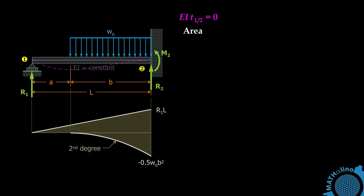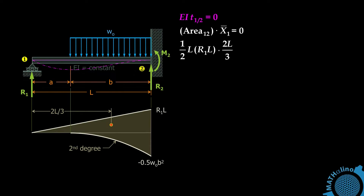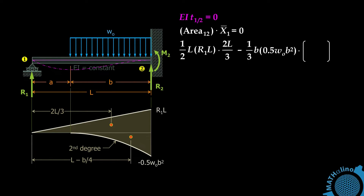The formula for deviation gives us the area of the moment diagram by parts between 1 and 2, multiplied by x-bar from 1, where x-bar is the distance from point 1 to the centroid of the area. For the triangular area: one-half times base L times altitude R1L, times centroid from 1 of 2L over 3. For the negative parabolic spandrel: minus one-third times base L times altitude 0.5 WOB squared. The centroidal distance from point 2 is B over 4, so its distance from point 1 is L minus B over 4.